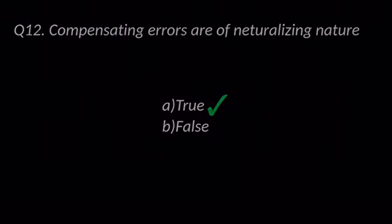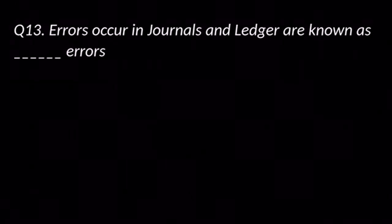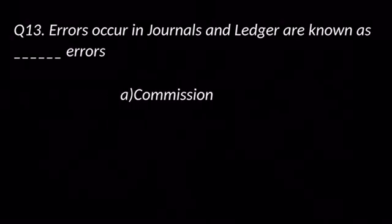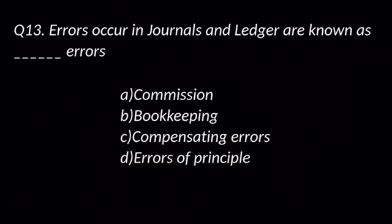Question number thirteen: Errors occurring in journal and ledger are known as dash errors. Options are: A. Commission, B. Bookkeeping, C. Compensating errors, D. Errors of principle. The answer is B: Bookkeeping errors.